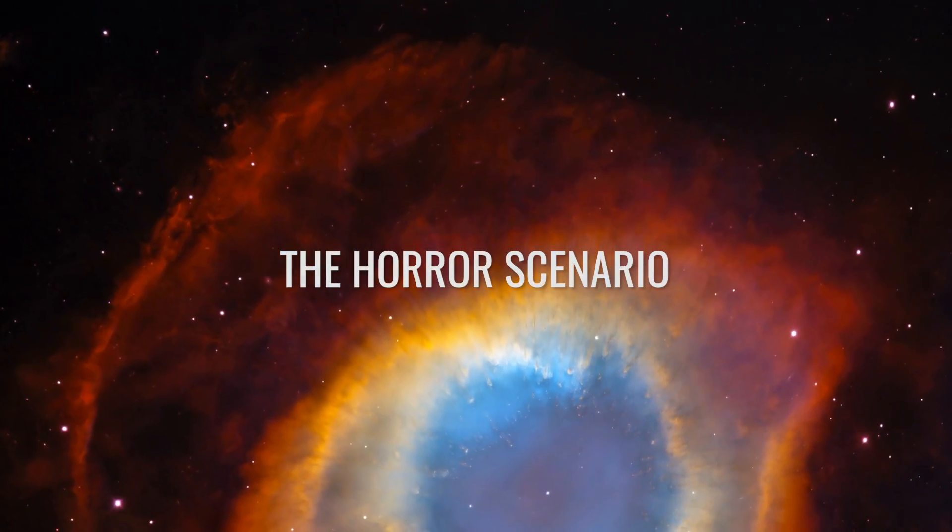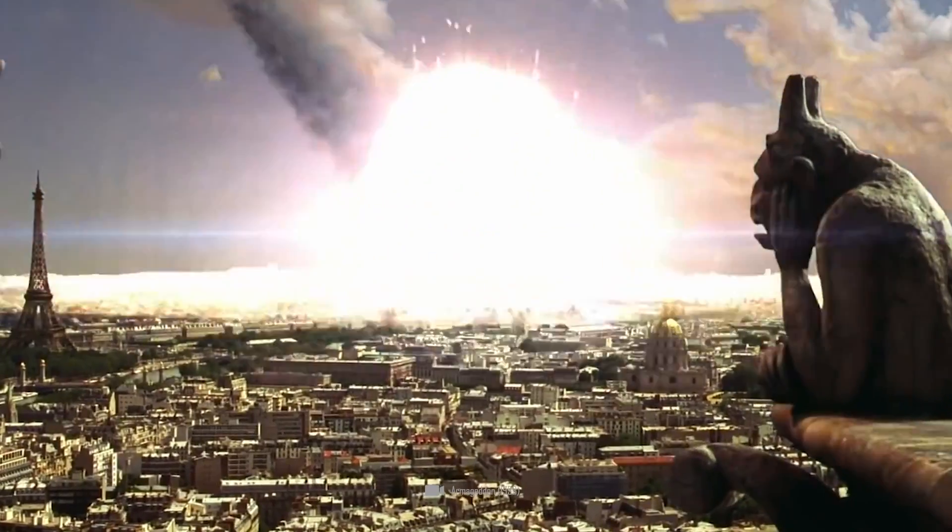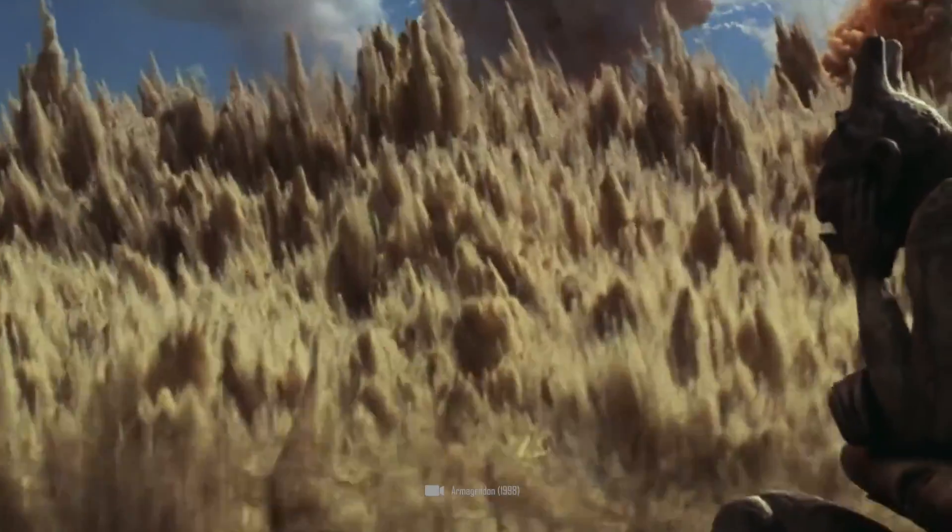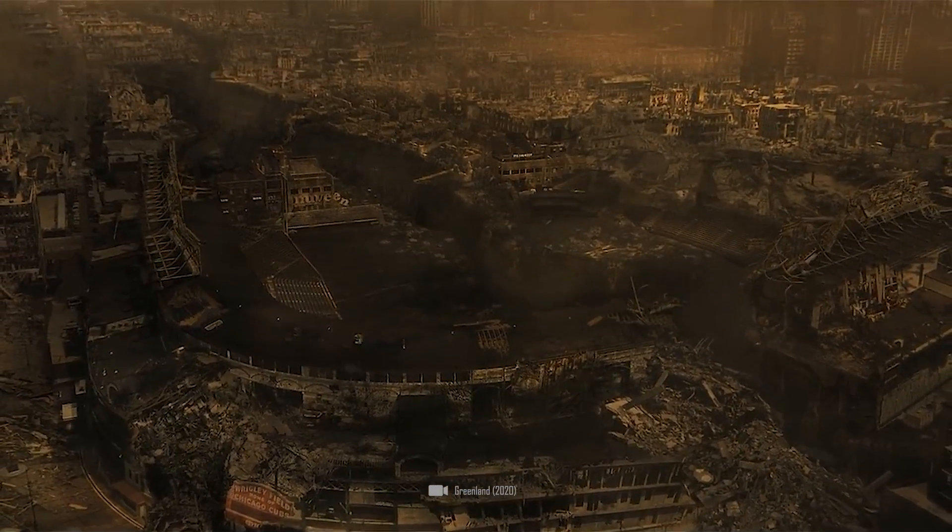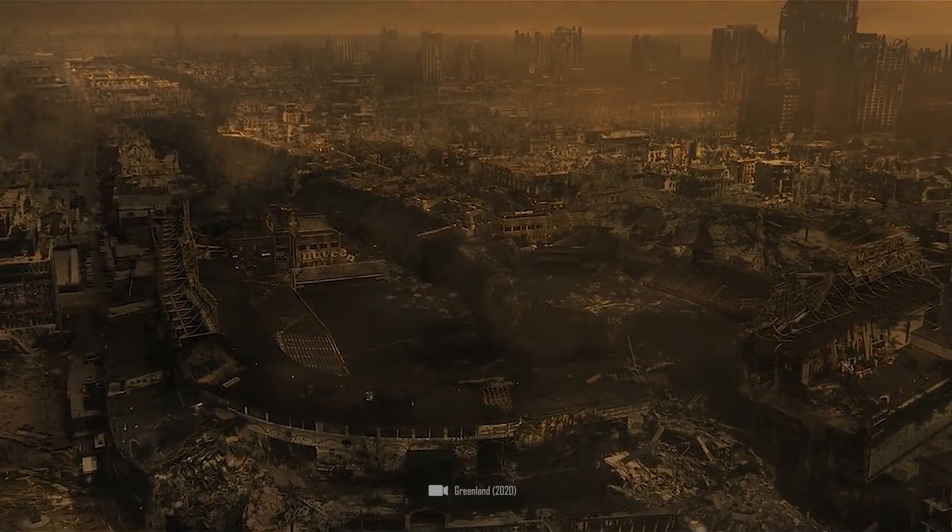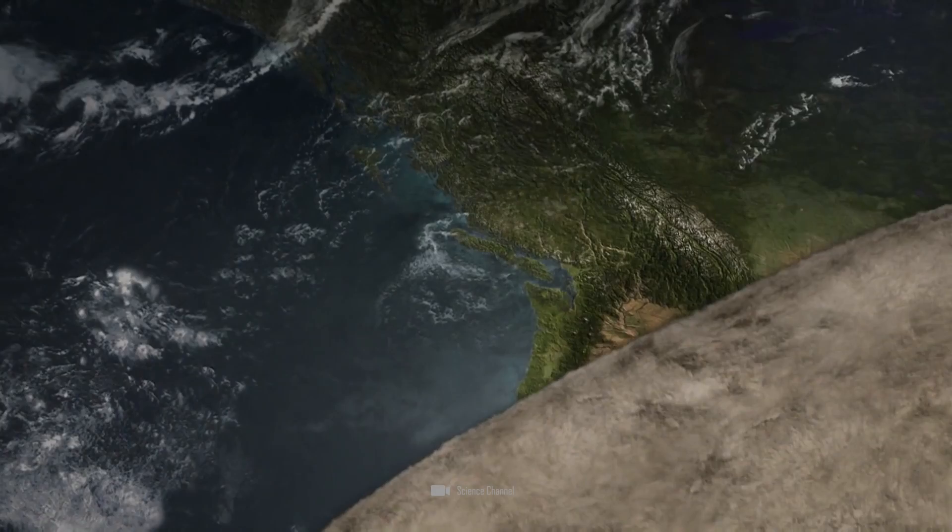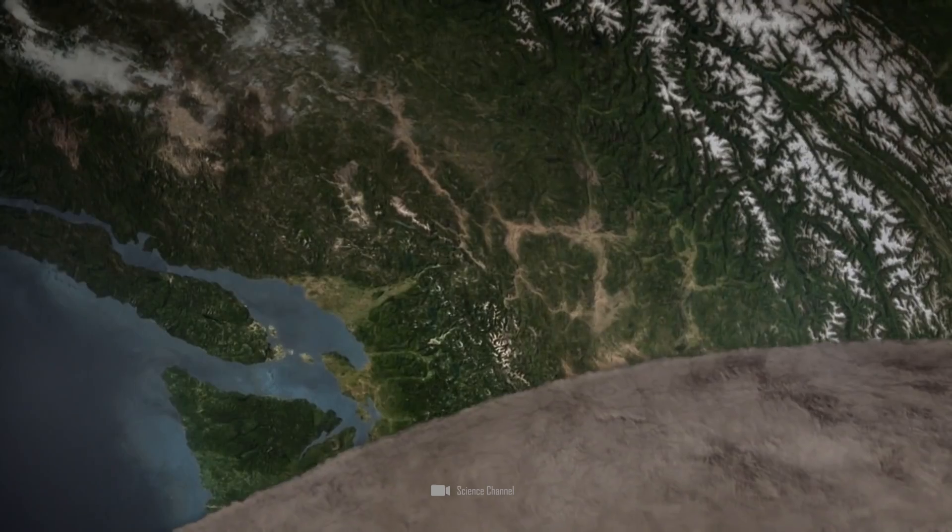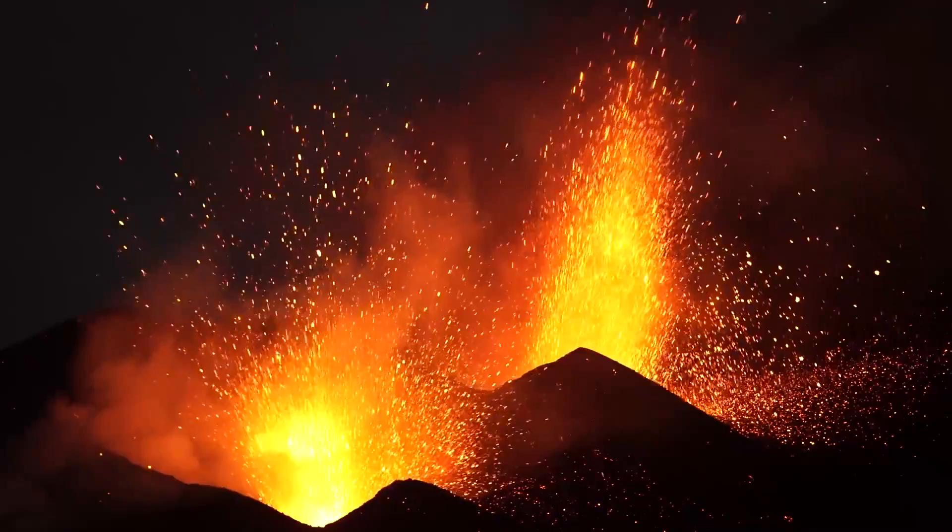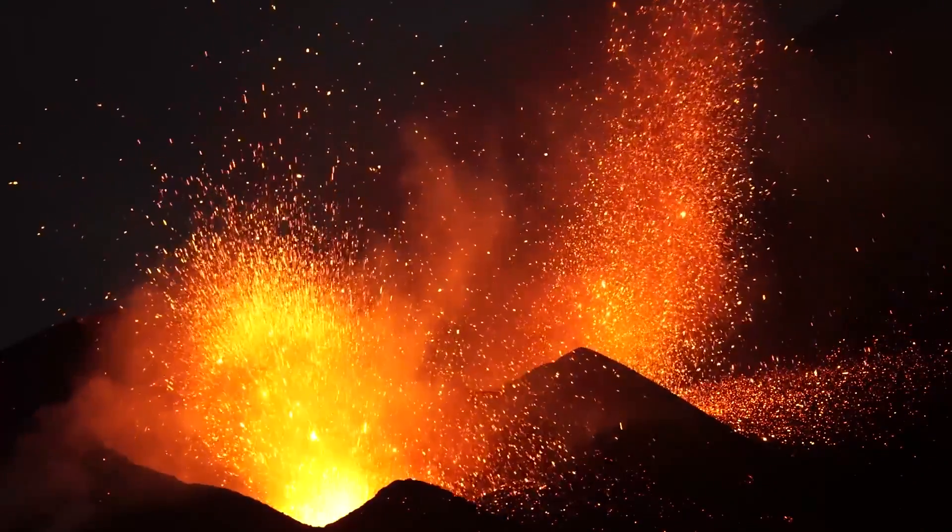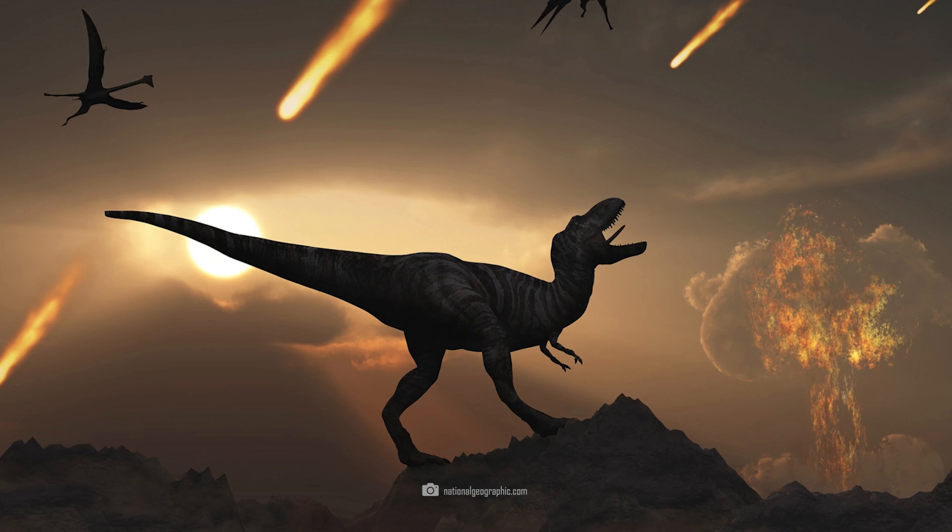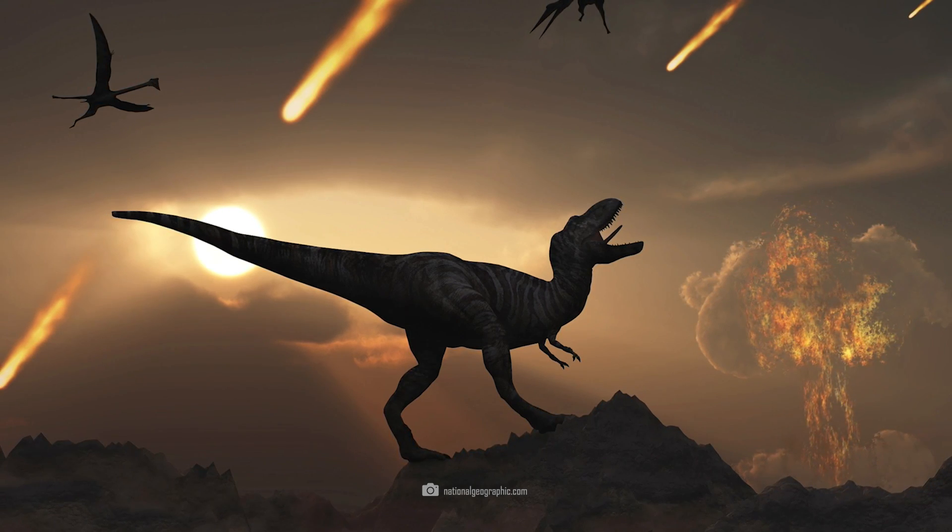The horror scenario: If a major asteroid strikes Earth, not only would the impact area be immediately destroyed, our entire civilization could be slowly doomed by the consequences of the catastrophe. Violent tsunamis, fires, dust, and toxins in the atmosphere, as well as inestimable chain reactions from further natural disasters such as earthquakes and volcanic eruptions, could destroy us just as the Chicxulub asteroid once did to the dinosaurs.